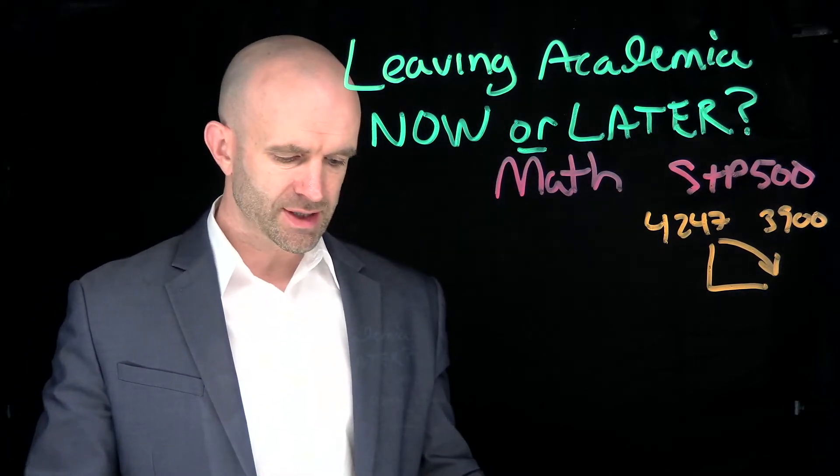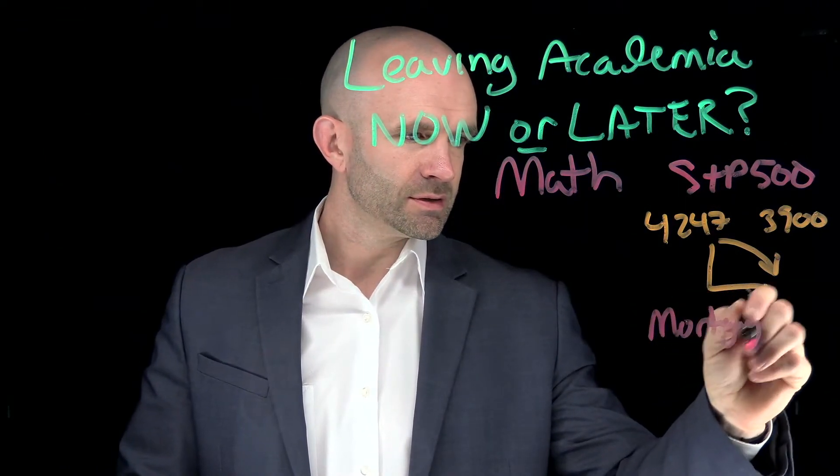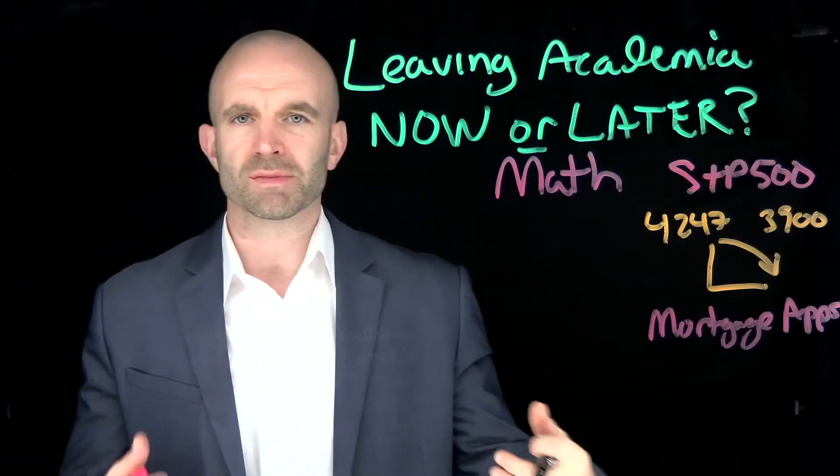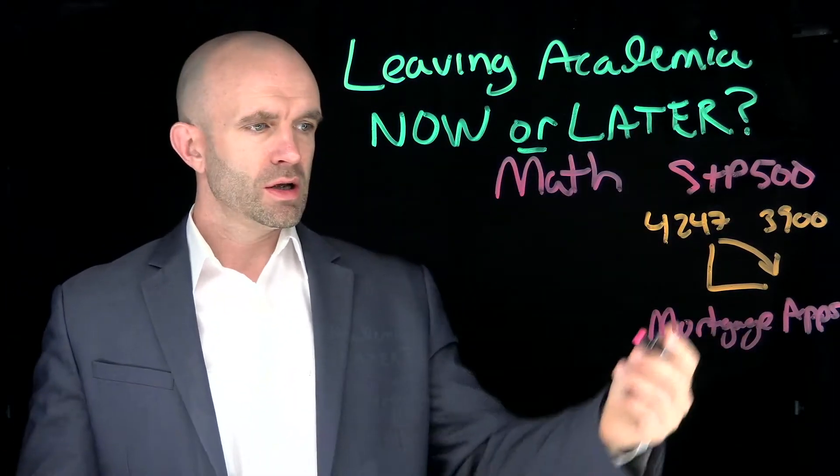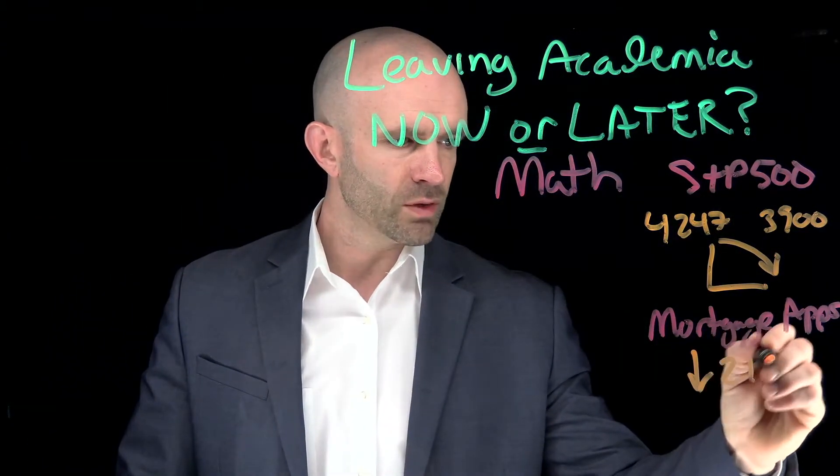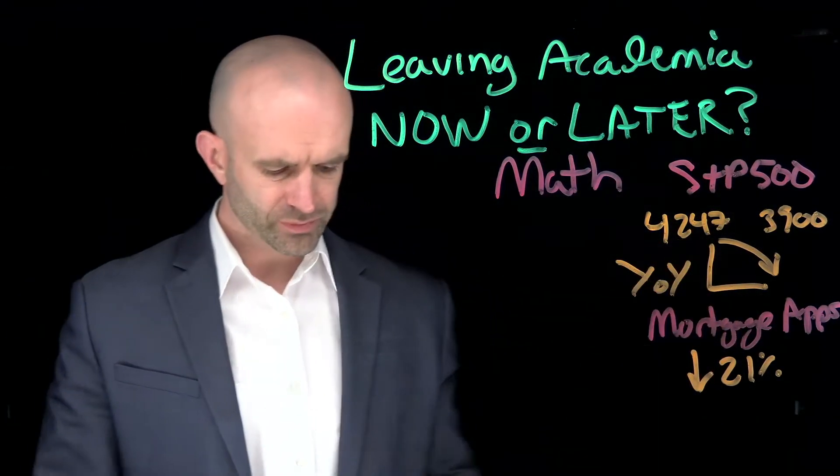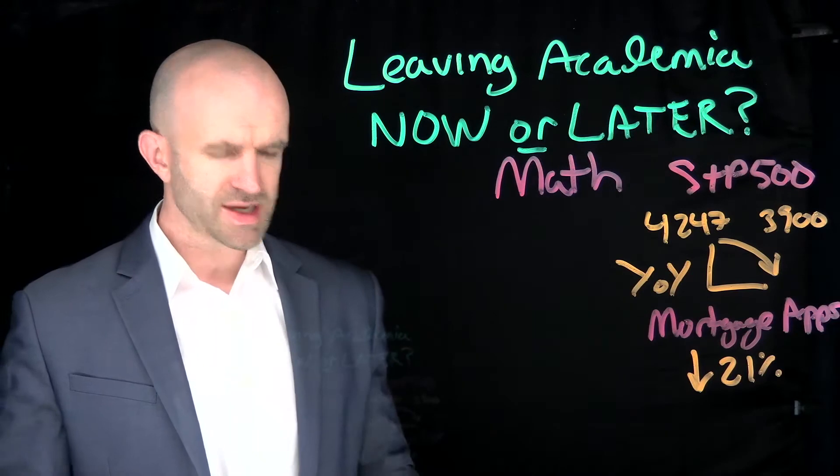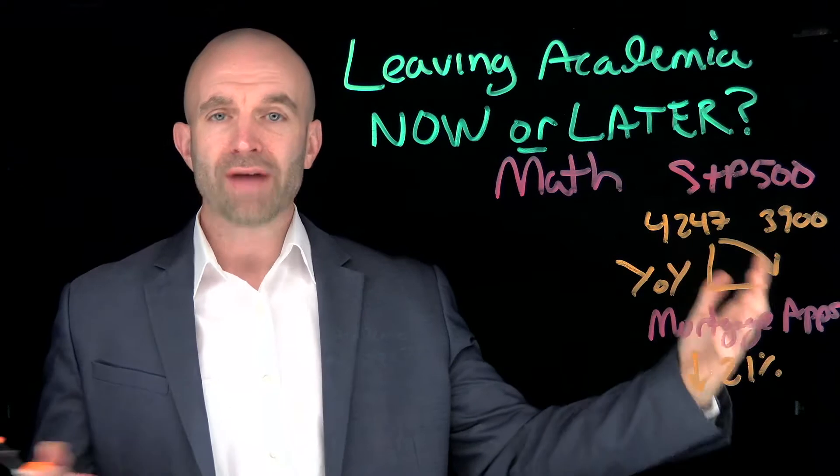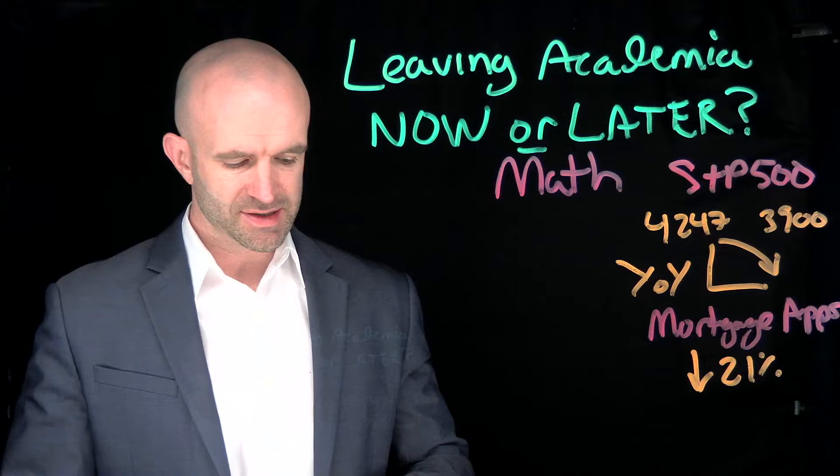What are some other leading indicators? We have mortgage applications. Why would that be a leading indicator? Because if people are applying for mortgages, it means they feel comfortable taking on loans. What's happening with mortgage applications? They are down 21% year over year. I've been taking a lot of notes because I really want to build this case on why delaying leaving academia, if you have your PhD, or not having a job lined up at graduation is definitely a mistake today.